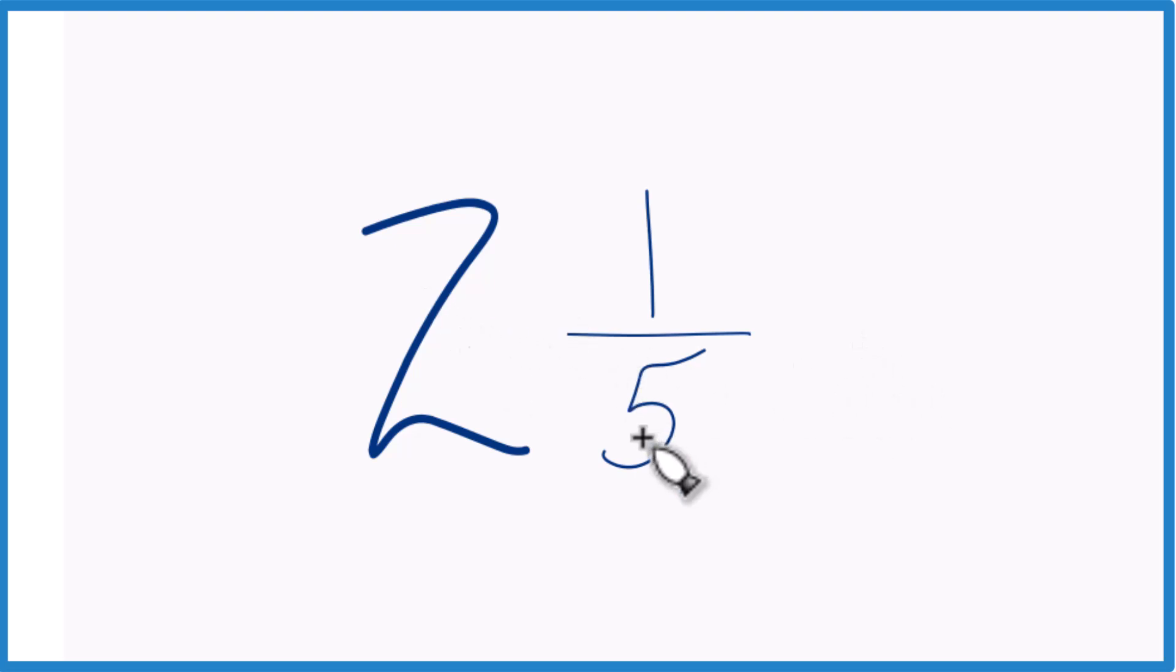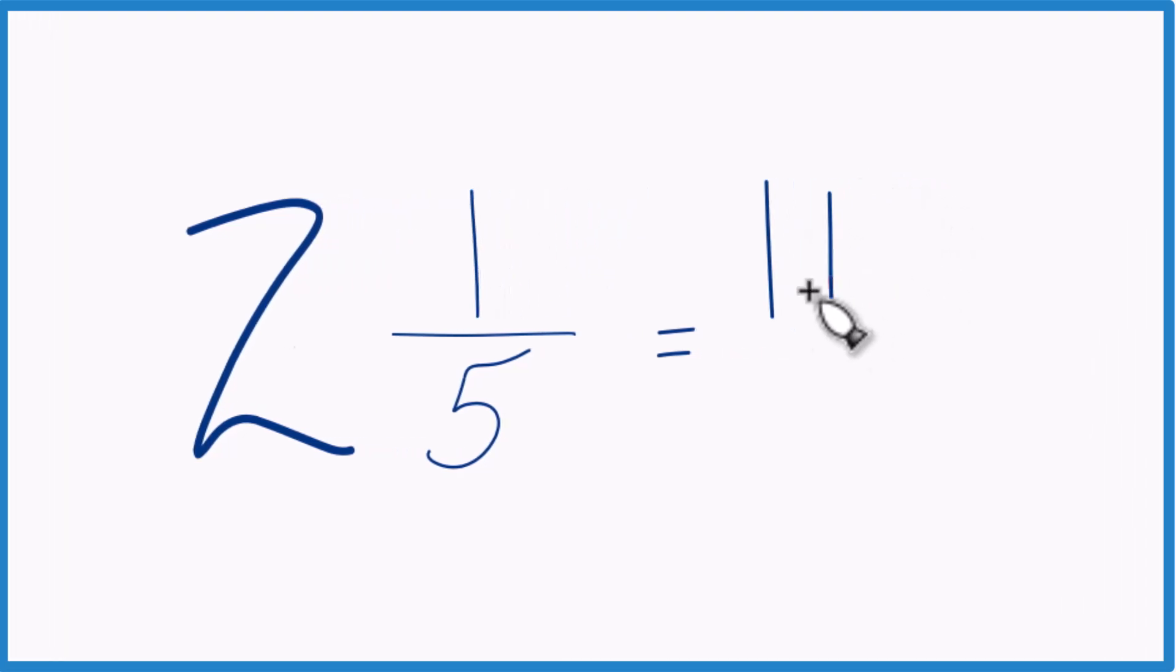2 times 5, that's 10. 10 plus 1, that equals 11. And then we just bring the denominator across, and we have our improper fraction, where this numerator here is greater than the denominator.